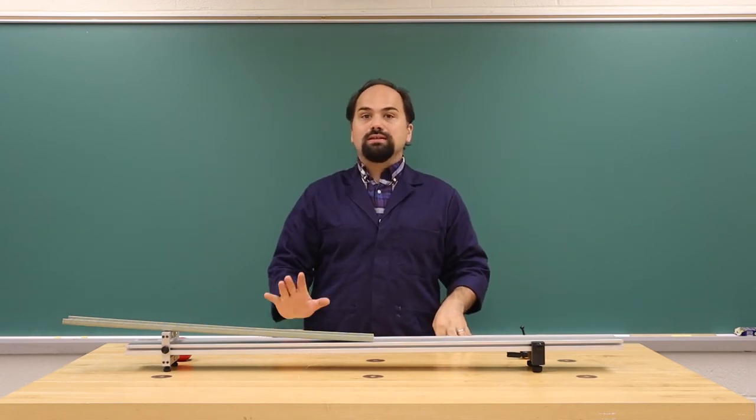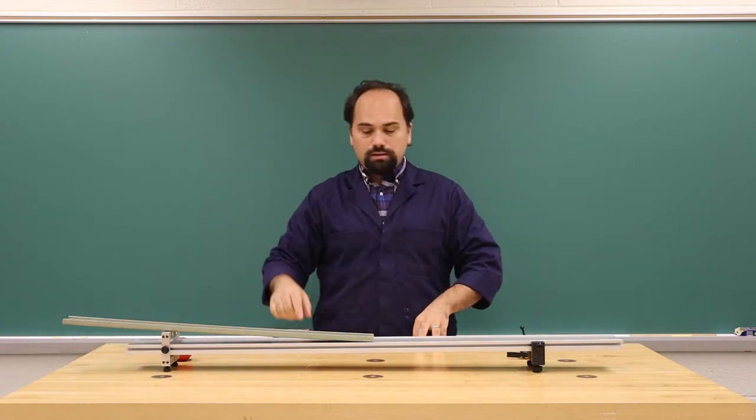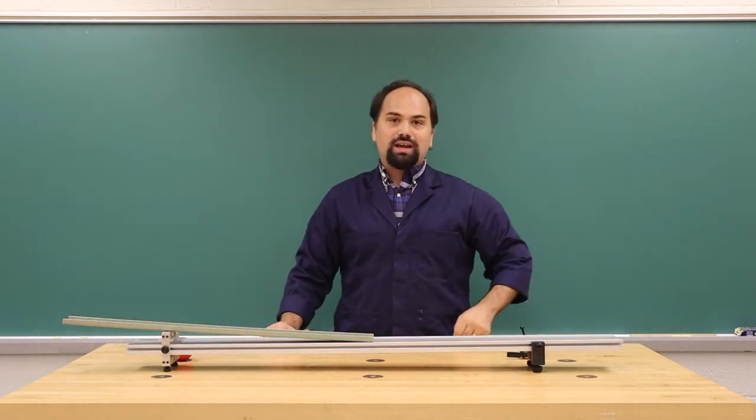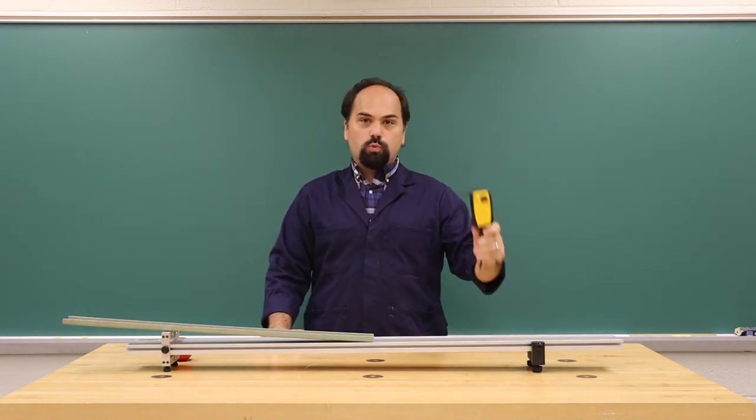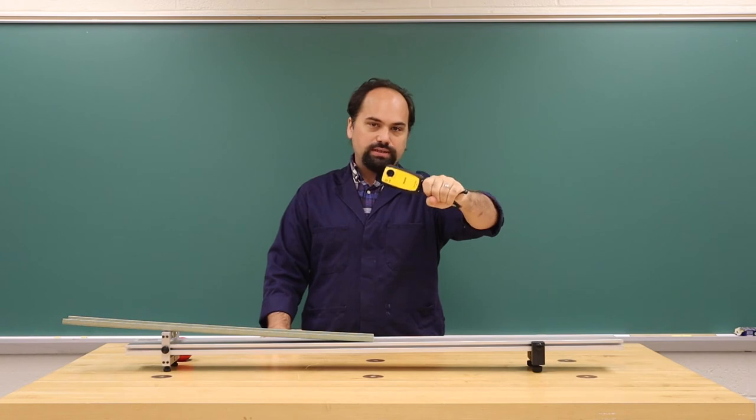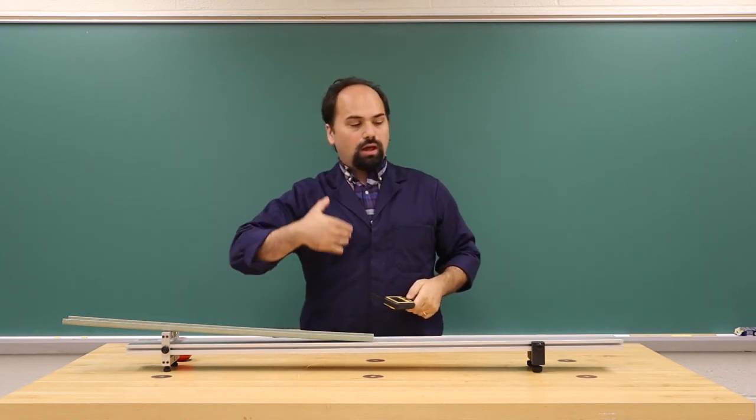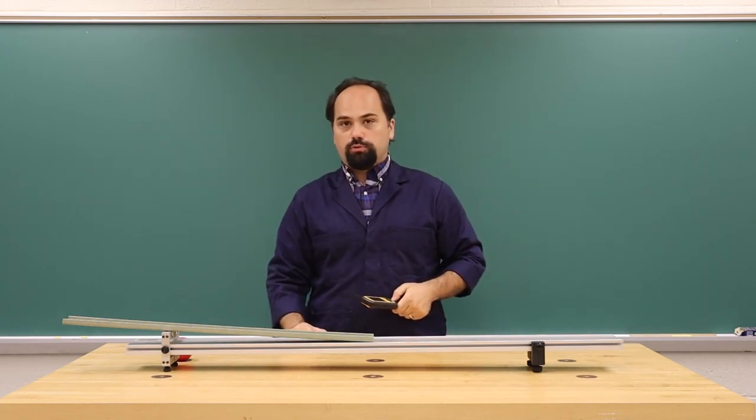So you can define that this point is zero and along the length of the track is defining the X axis. So if you were holding the camera perfectly straight, we can adjust that after the fact in Logger Pro.